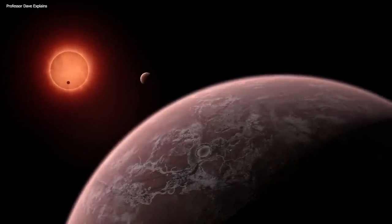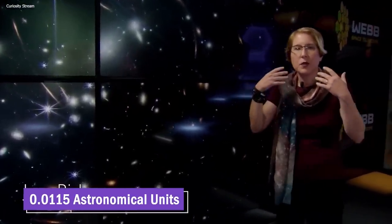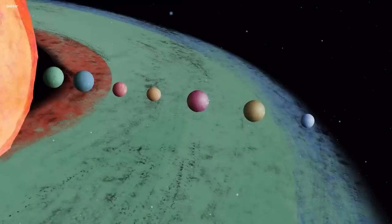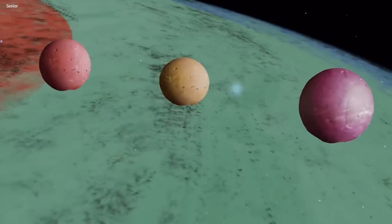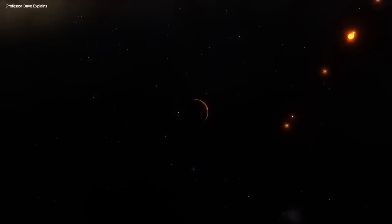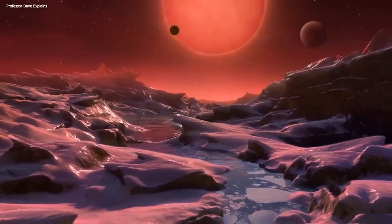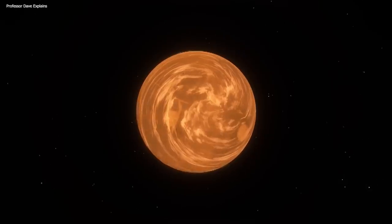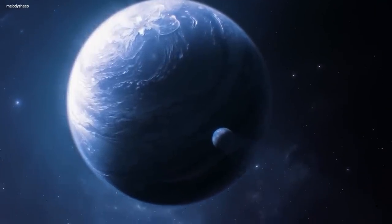One interesting aspect of TRAPPIST-1b is how close it is to its star. It orbits at a distance of only 0.0115 astronomical units. If that seems like gibberish, imagine it this way. It's around 30 times closer to its star than Mercury is to the Sun. Because of this, it whips around its star in a super-fast orbit, completing one cycle every 1.5 days. This speed means the planet is tidally locked, which is just a fancy way of saying one side always faces the star while the other side constantly faces the cold void of space.